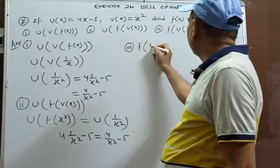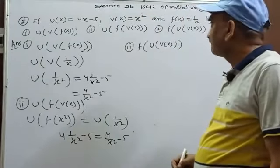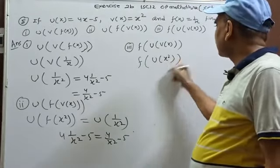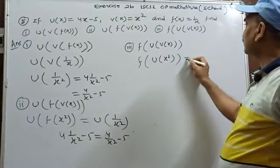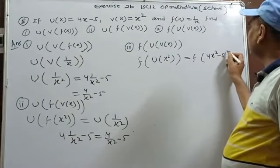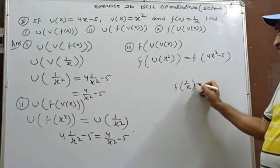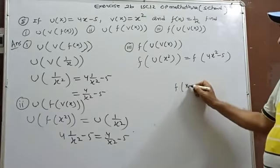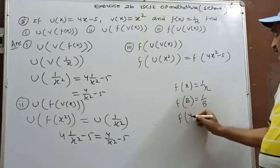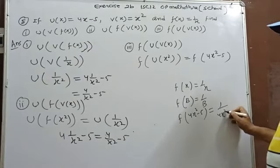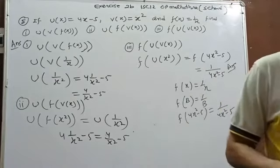f(u(v(x))): v(x)=x², then u(x²)=4x²-5, then f(4x²-5)=1/(4x²-5).